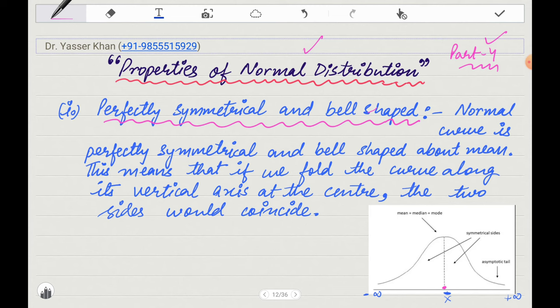So the first point we discuss is perfectly symmetrical and bell shaped. Perfectly symmetrical means the same side and the other side. The mean will be equal to the median and it will be bell shaped. If it goes on the vertical axis, if it goes on the bell, it goes on the other side. So the first point is that it is perfectly symmetrical and bell shaped.